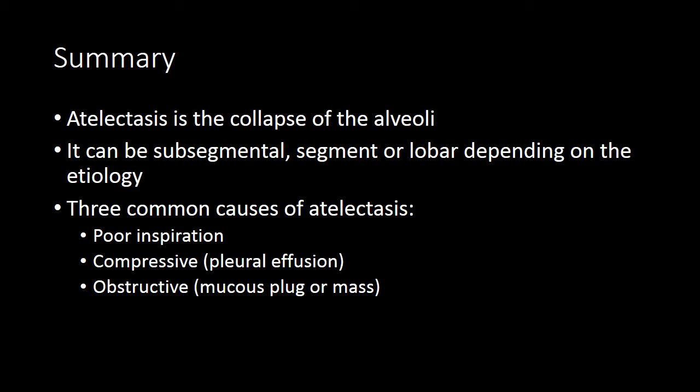In summary, atelectasis is a collapse of the alveoli or acini. It comes from a number of different causes and can have many different appearances. When subsegmental, it often looks linear or discoid. If it involves an entire segment, there may be greater density and a more wedge-shaped appearance. If lobar, you may see substantially decreased volumes in the hemithorax, a well-defined upward or downward shifted pleural line, and very dense opacity. Remember these three common causes of atelectasis and think about why each one might result in collapse of your airspaces.